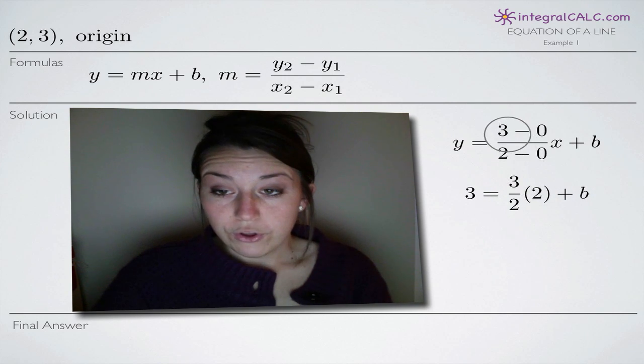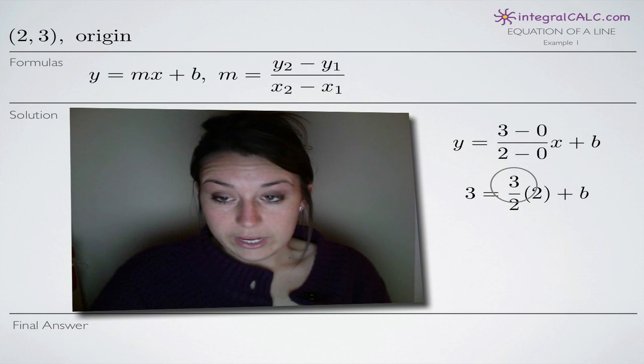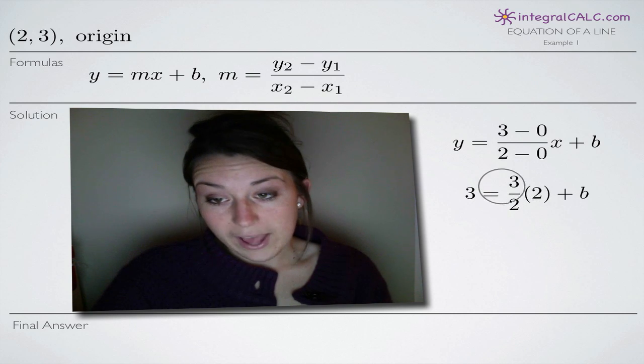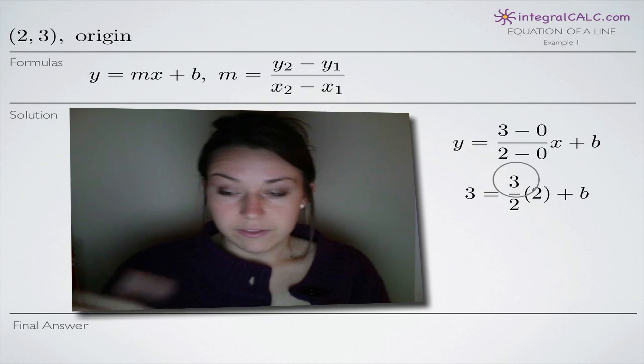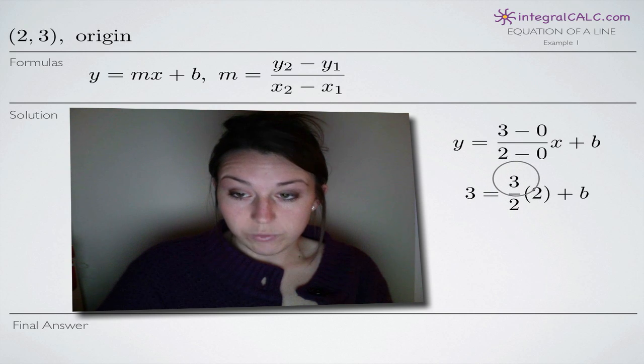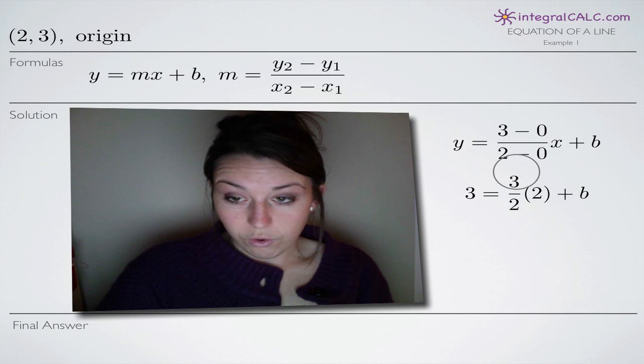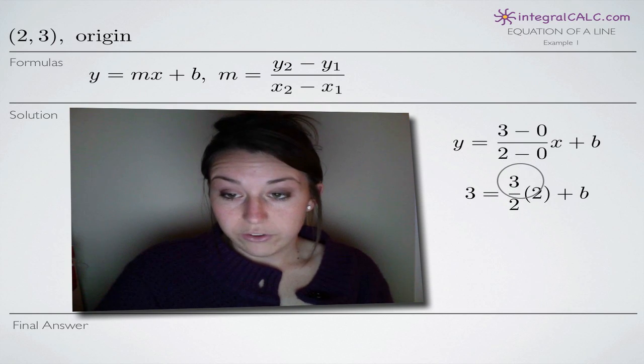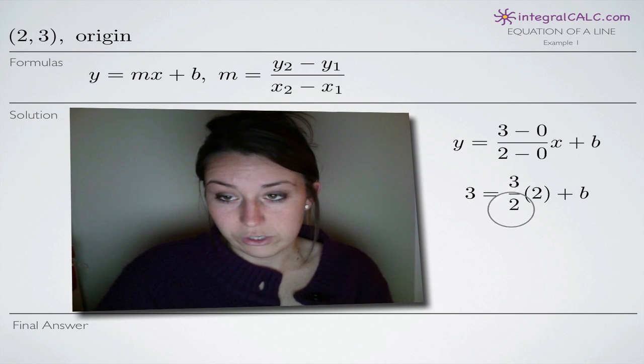First of all, we can simplify our slope fraction. 3 minus 0 in the numerator gives us 3. 2 minus 0 in the denominator gives us 2. So our slope is 3 halves, which means that every time the line moves up 3 units, the y coordinate is in the numerator, it also moves to the right 2 units. It's change in y over change in x. The change in y is 3, it moves up 3. The change in x is 2, it moves over 2.